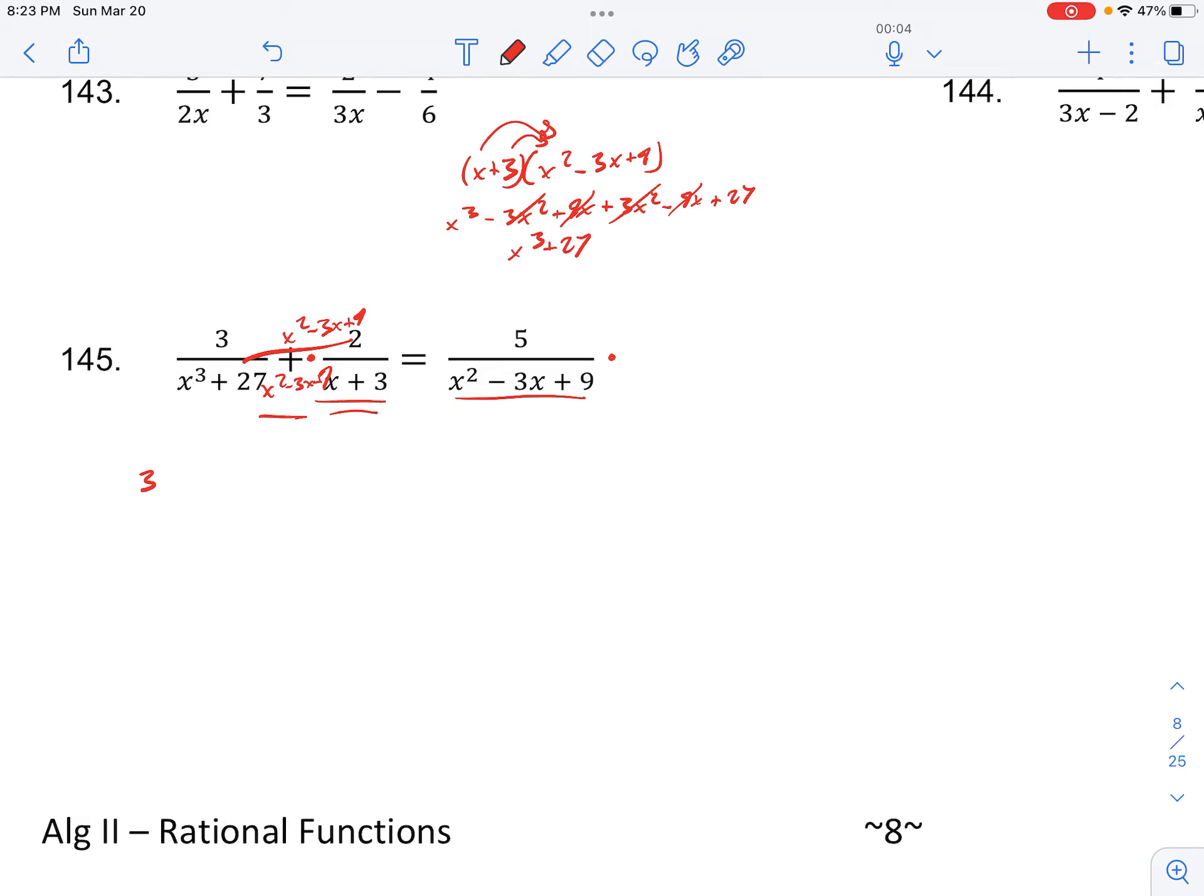So it works out very nicely because we can write this as 3 over x cubed plus 27 plus 2 times x squared minus 3x plus 9 over x cubed plus 27 equals 5 over, now here we would multiply by this x plus 3 over x plus 3, so that's going to be 5 times x plus 3 over x cubed plus 27.